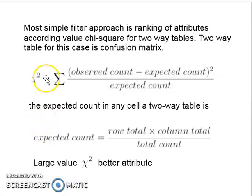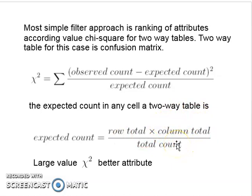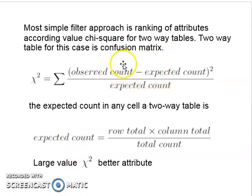For the chi-square of two-type variables, x-square is calculated as the summation of: (observed count minus expected count) squared, divided by expected count — summed over all cells in the two-way table. The expected count for any cell is calculated as: row total multiplied by column total, divided by grand total. For example, if the row total is 15 and column total is 20, the grand total is 35. A larger value of x-square indicates a stronger relationship.